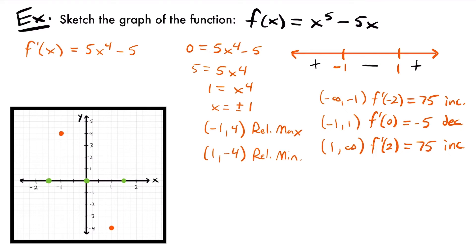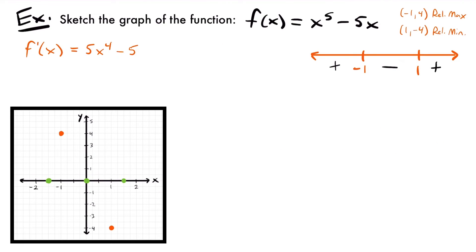Now that we've plotted our relative extrema, we're done with the first derivative. We'll move on to the second derivative to look at inflection points and the concavity of our function. Taking the second derivative: f double prime of x equals 4 times 5, so 20, times x to the third power — subtracting one from the exponent — and the derivative of the constant negative 5 is zero. So f double prime of x equals 20x cubed. Now we want to find potential inflection points by setting that second derivative equal to zero.